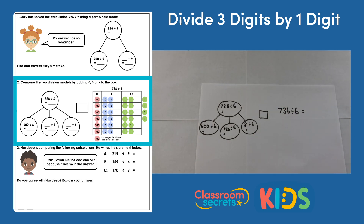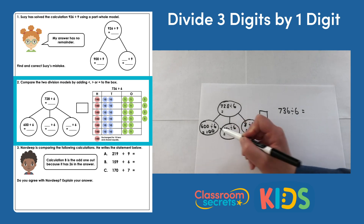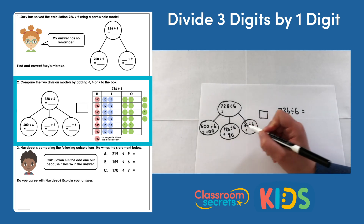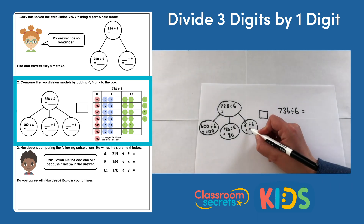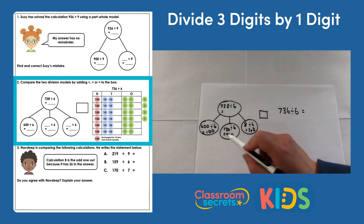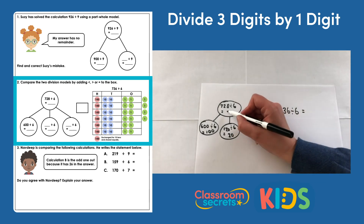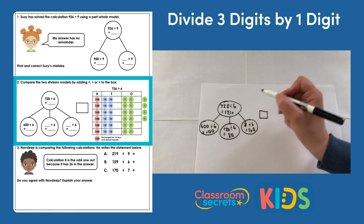Now we can find the answers: 600 divided by 6 is 100, 120 divided by 6 is 20, and 8 divided by 6 is 1 remainder 2. We can then add the three parts together to get the whole, giving us 121 remainder 2.